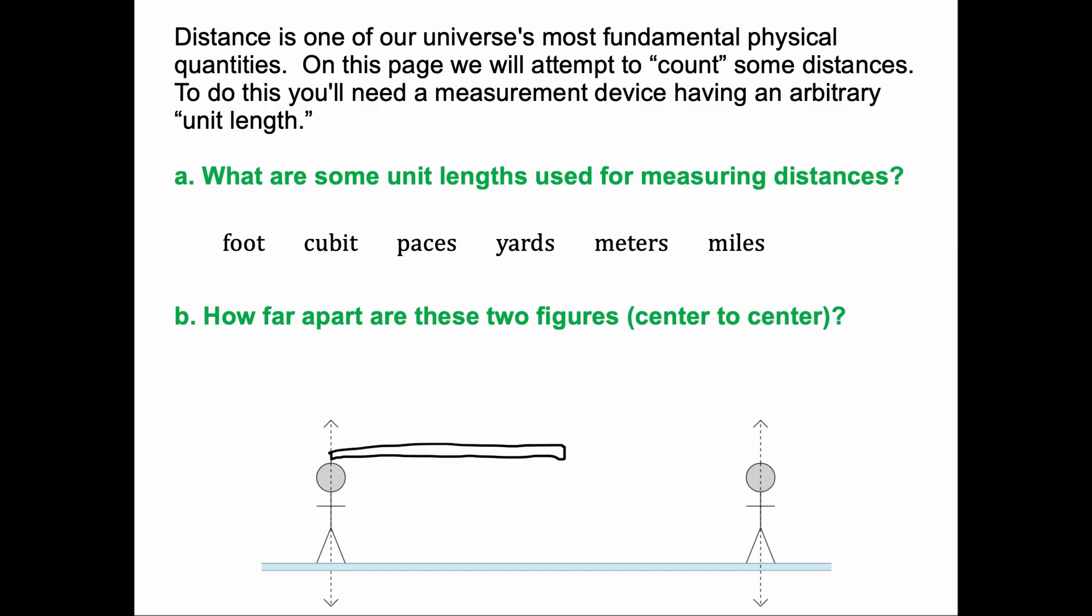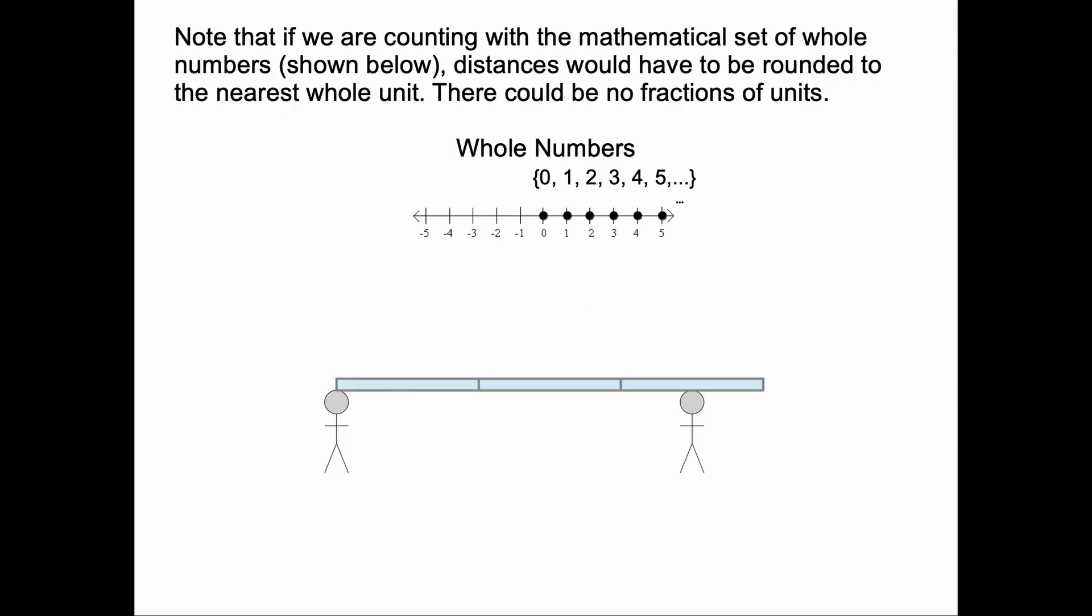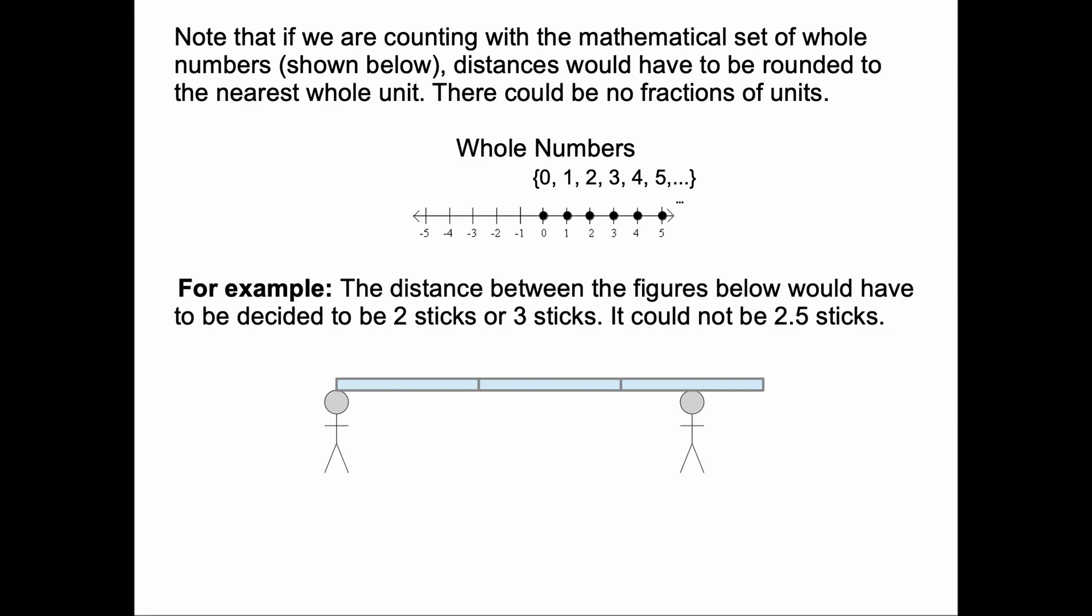What I'll do is I'll repeat the object, placing it end to end, to see how far apart they are. And it's close to two, a little bit less. But remember that in the past, we didn't have decimals and fractions. Note that if we're counting with the mathematical set of whole numbers shown below, distances would have to be rounded to the nearest whole unit. There could be no fractions of units. So the distance between these figures would have to be chosen to be two sticks or three sticks, and it could not be 2.5 sticks.